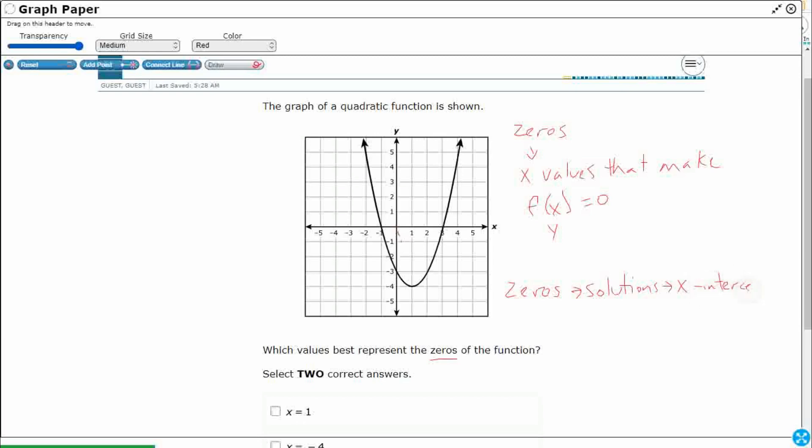Now, if you hear the term x-intercept, that's probably going to be more of a dead giveaway. We're very comfortable with the term y-intercept. The y-intercept is where we cross the y-axis. So the x-intercept is going to be where we cross the x-axis. Because guess what happens? When we cross the x-axis, that means y equals zero.